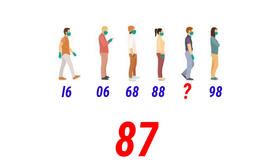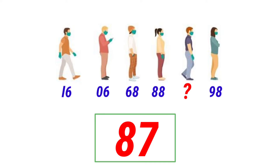The correct answer is 87. The patients were holding their tokens upside down. When you look at the tokens upside down, you can see the pattern: 86, then the missing place is 87, then 88, 89, 90. So the missing token number is 87.